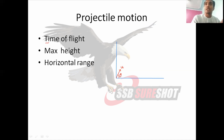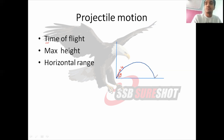Time of flight is that particular time for which the particle is in motion. The trajectory will look something like this — this is our projectile motion path. Taking the components of velocity: in the x-axis it will be u cosθ, and in the y-axis it will be u sinθ.